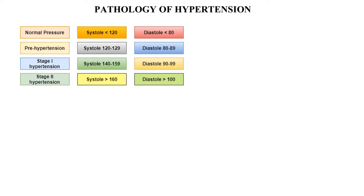Today our topic of discussion is hypertension. Before entering into this unit, let us see the pathology of hypertension. There are four kinds: normal pressure where systole is less than 120 mmHg and diastole is less than 80 mmHg; pre-hypertension where systole falls between 120–129 and diastole between 80–89; Stage 1 hypertension where systole is 140–159 and diastole is 90–99; and Stage 2 hypertension where systole is greater than 160 and diastole is greater than 100.